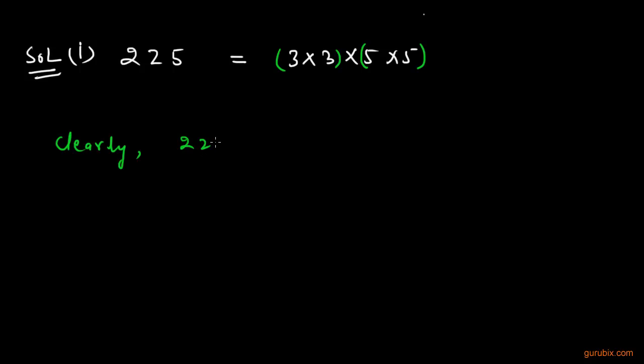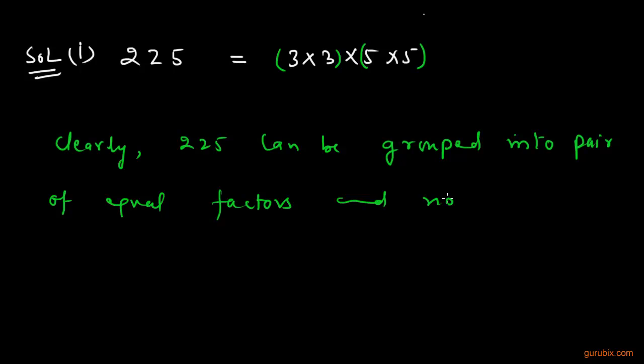And clearly, 225 can be grouped into pair of equal factors and no factor is left over. So, we say that 225 is a perfect square.